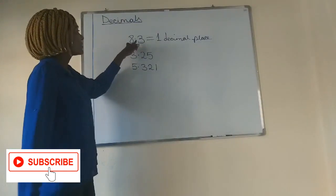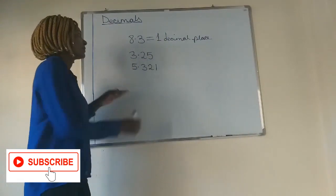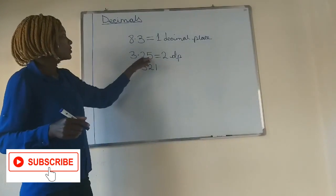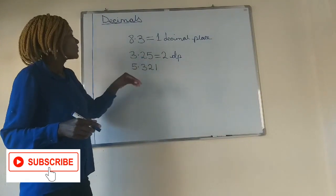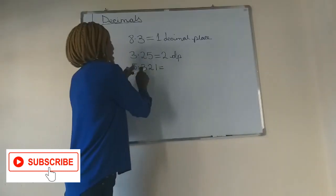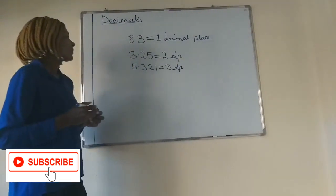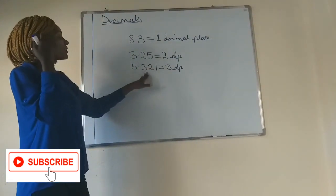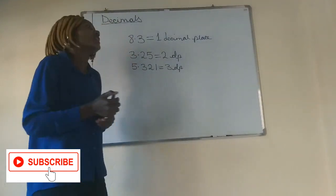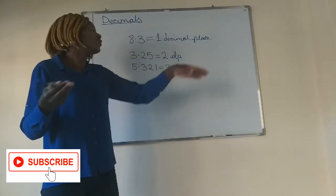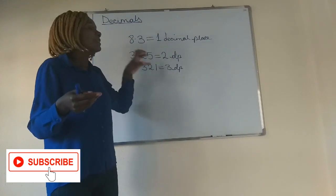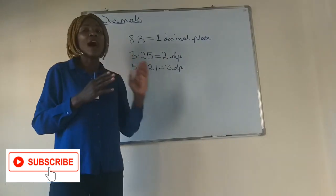Because it is one number after a decimal point, we call it one decimal place. If there are two numbers after the decimal point, there are two decimal places. If there are three numbers after the decimal point, there are three decimal places. Take note — sometimes they ask you, even when rounding off, they will ask you to round to one decimal place, and you get confused by the language. So decimal places means the digits after a decimal point.